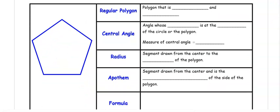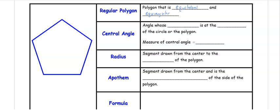Now we look at regular polygons. A regular polygon is both equilateral — meaning it has congruent sides — and equiangular. The central angle is an angle whose vertex is at the center of the polygon. The central angle equals 360 divided by the number of sides.